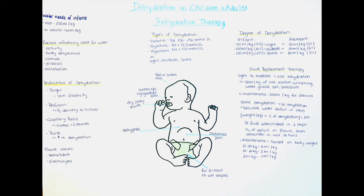The solution we administer is generally Ringer's solution, which is a type of isotonic crystalloid fluid solution available in most hospitals. For the maintenance therapy, there's a nice rule of thumb called the 4-2-1 rule, which gives us the hourly fluid rate based on the weight of the patient. We categorize it by body weight: for the first 10 kg, we give 4 mL per kilogram per hour; for the next 10 kg, we give 2 mL per kilogram; and for every kilogram over 20, the patient gets 1 mL per extra kilogram.